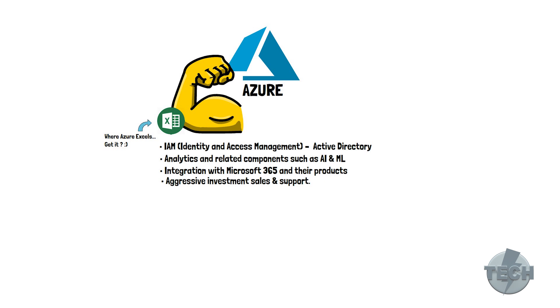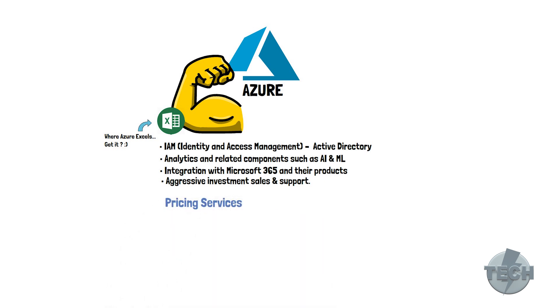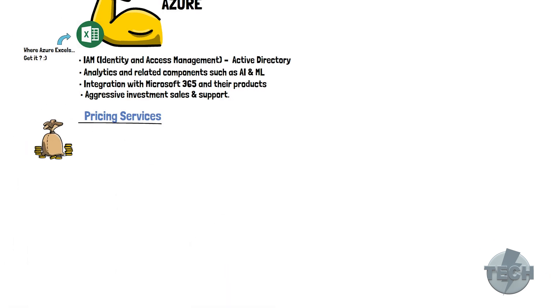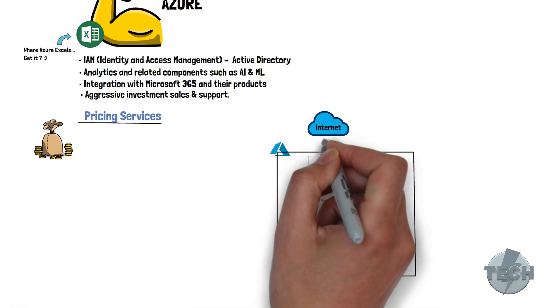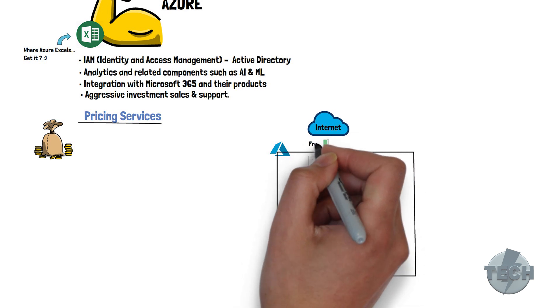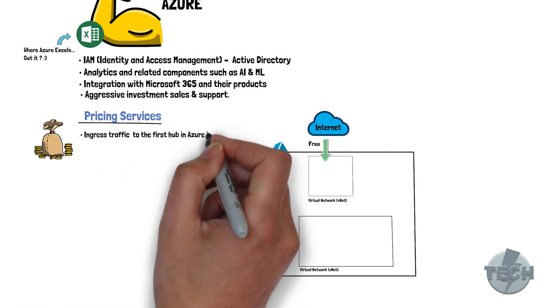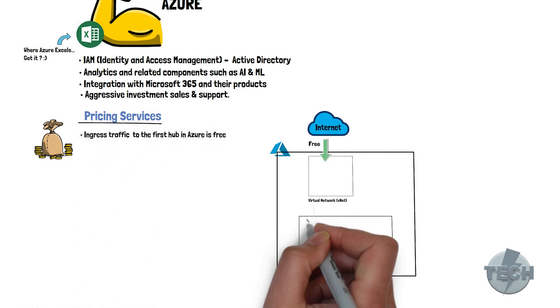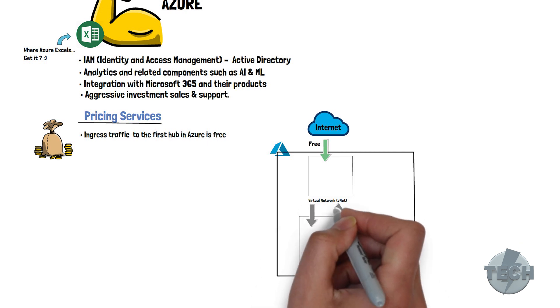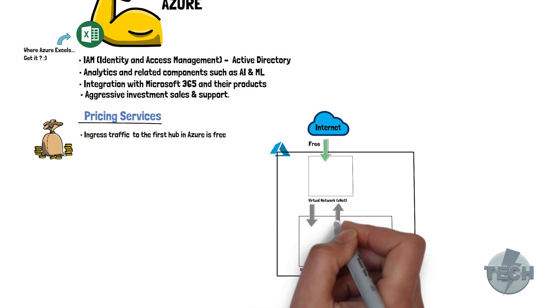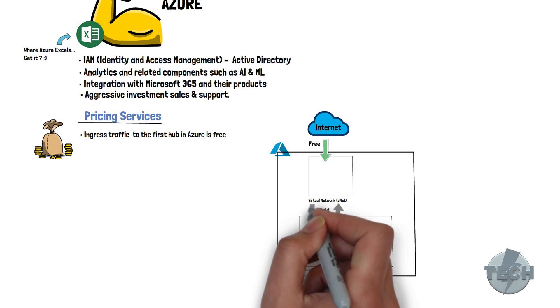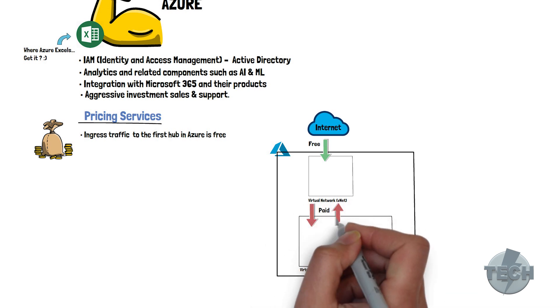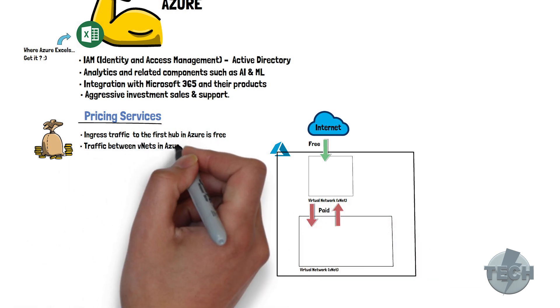Pricing for services. As an architect, there are some key points you need to know about pricing in Azure. Ingress traffic — that's the incoming traffic — to the first hub in Azure is free. Traffic between virtual networks, also known as VNets in Azure, always has a cost depending on the amount of traffic going through. That's valid for both ingress and egress traffic.